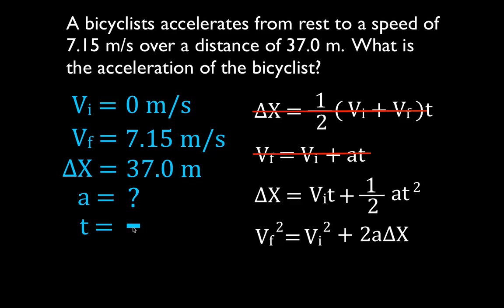The next equation — we're looking for the acceleration, so we have that. Do we know the other three variables? The change in position? Yes. The initial velocity? Yes. But once again, we don't know the time, so we cannot use that equation. The last equation — we're trying to solve for the acceleration, it has the acceleration in it. We know the final velocity, we know the initial velocity, we know the change in position. This is our equation.